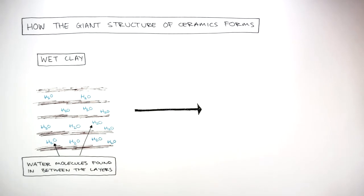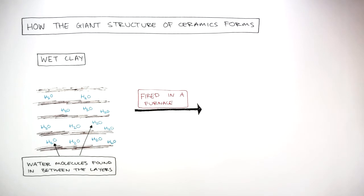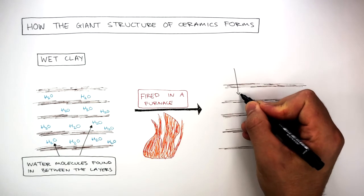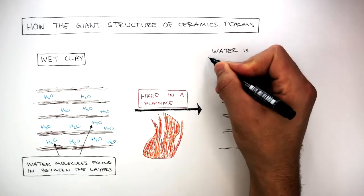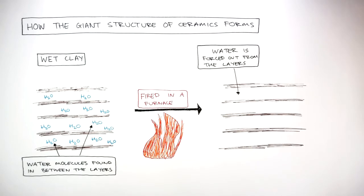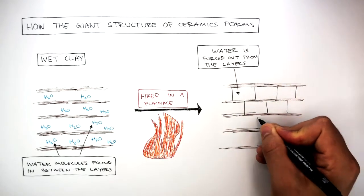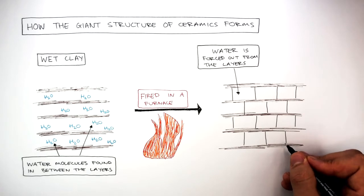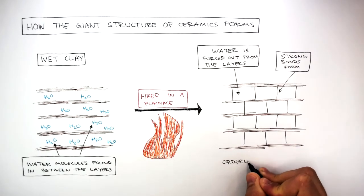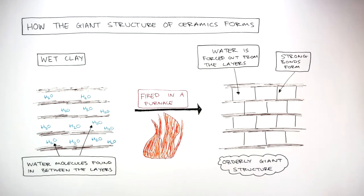In the next stage, the wet clay is fired in a furnace where a lot of heat energy is applied. When the wet clay is heated, water is forced out from between the layers, and strong bonds are formed between the layers in a giant structure. This is an orderly giant structure.